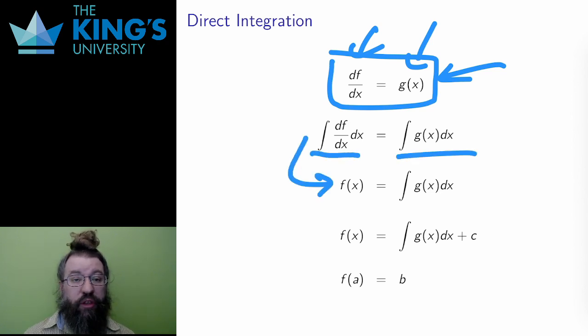So, I integrate both sides. On the left, the integral of the derivative is the original function. On the right, I have the integral of g, which will eventually involve the addition of a constant of integration.